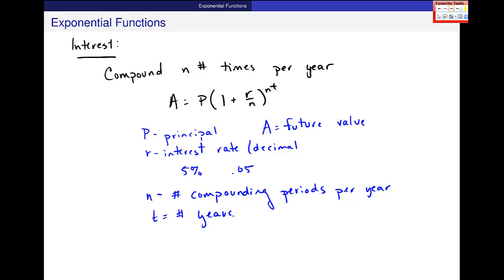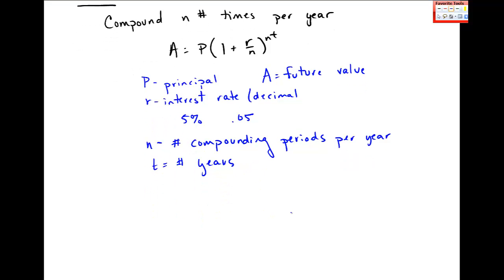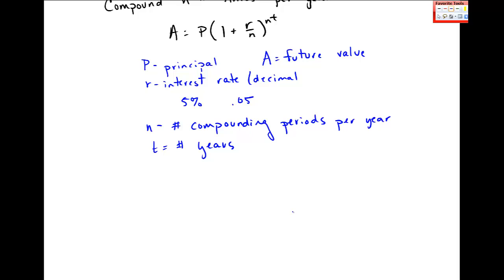So let's look at that. For N, usually most of these are pretty explicit in problems, except for this N sometimes trips students up. So N, it's just key words. When we say it's compounded annually, that means N is 1, one time, it's compounded one time per year.